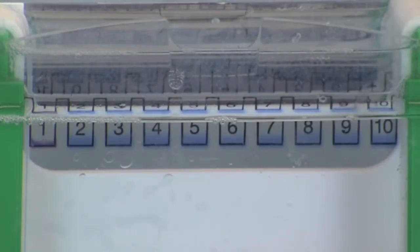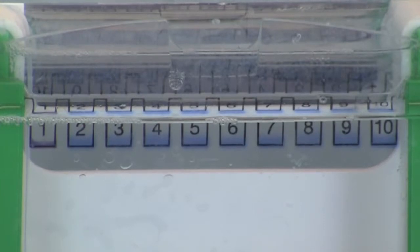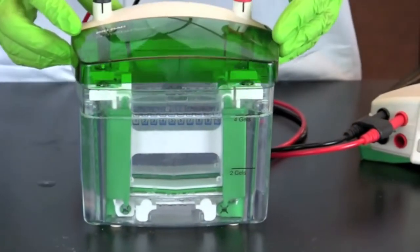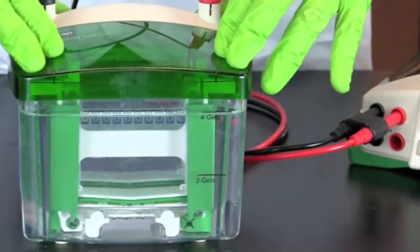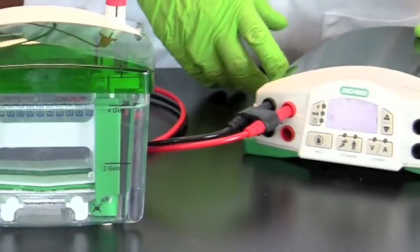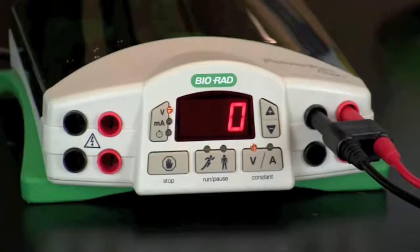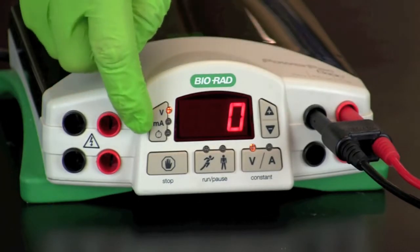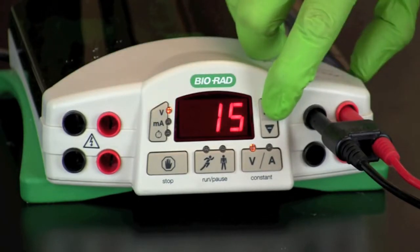In the last lane, load 10 microliters of actin and myosin standard. Place the lid on the electrophoresis chamber. Connect the electrical leads into the power supply in the proper orientation, red to red and black to black. Turn on the power and set the voltage at 200 volts.